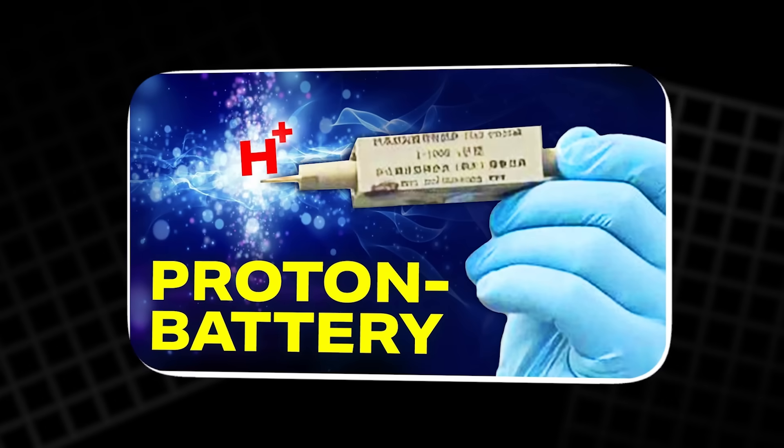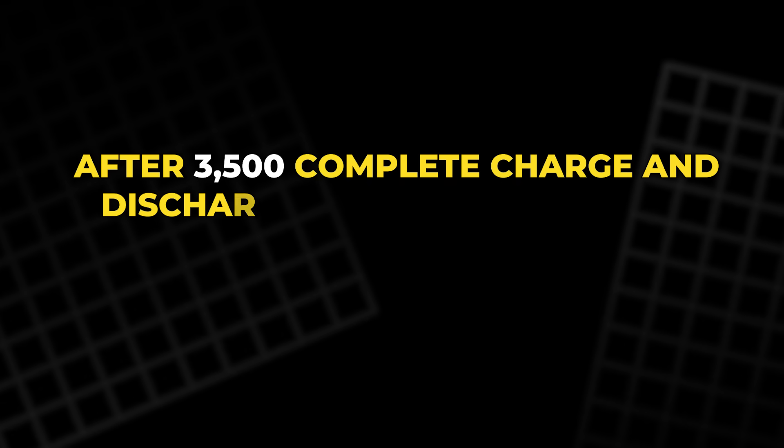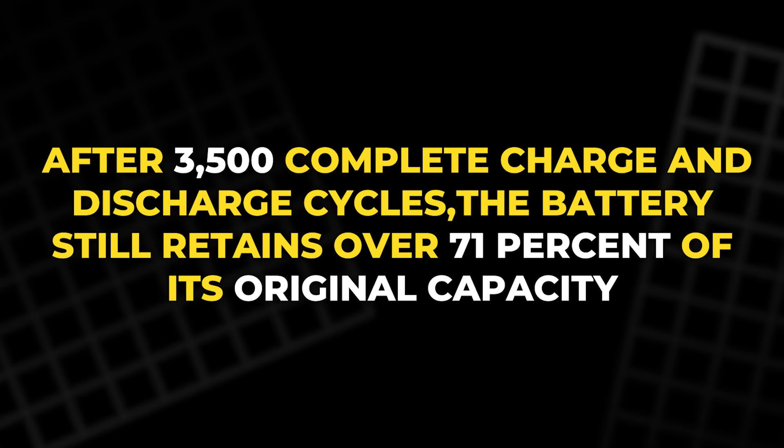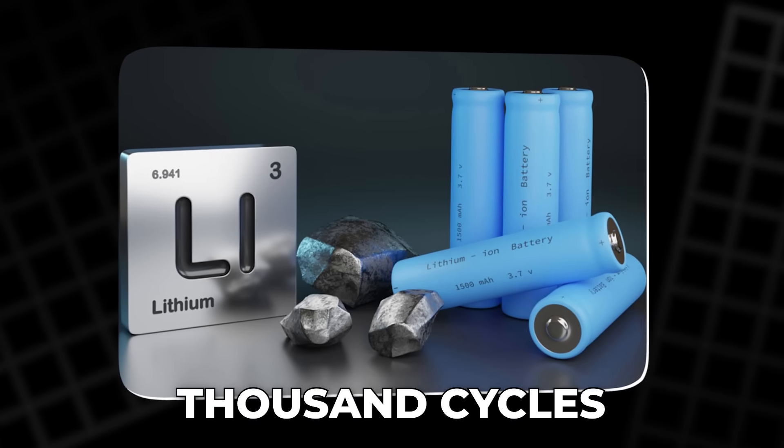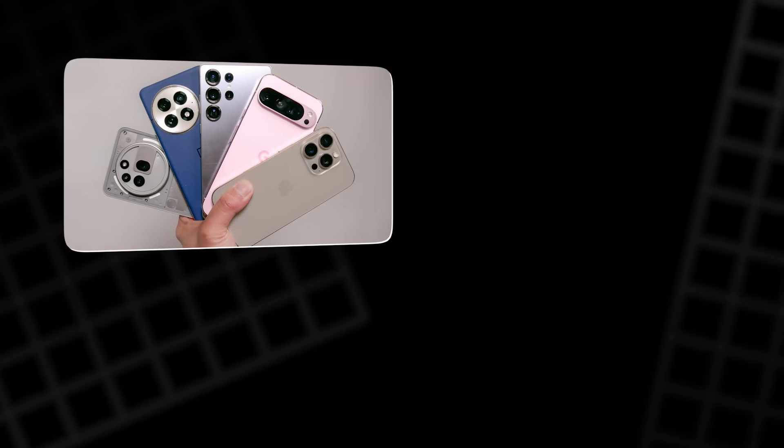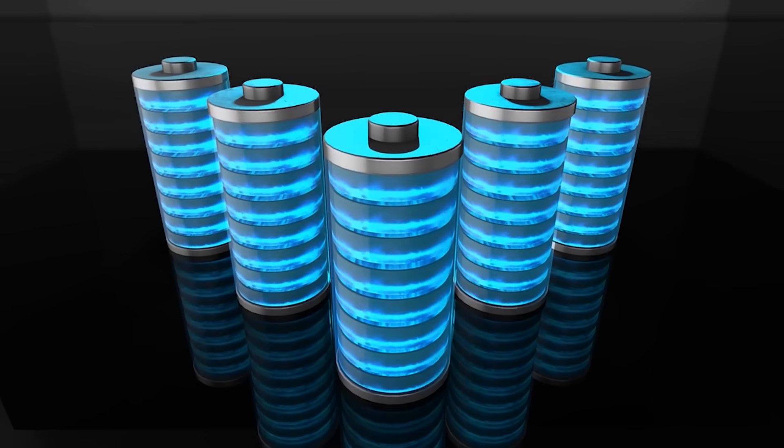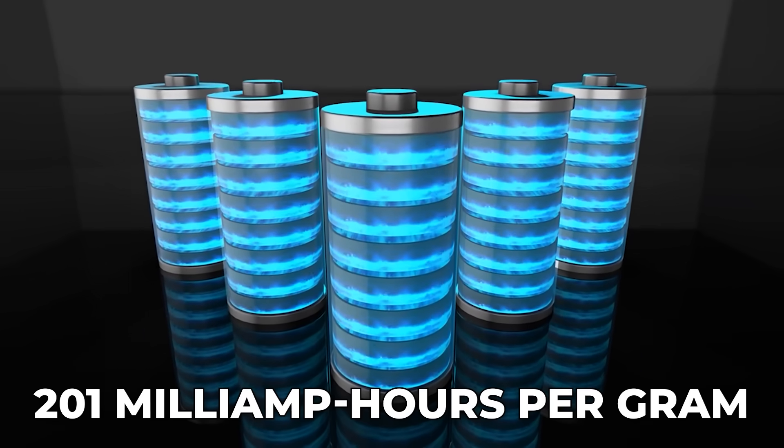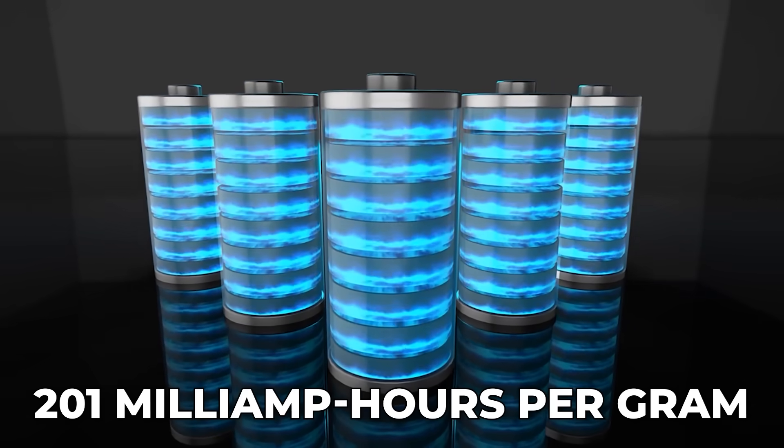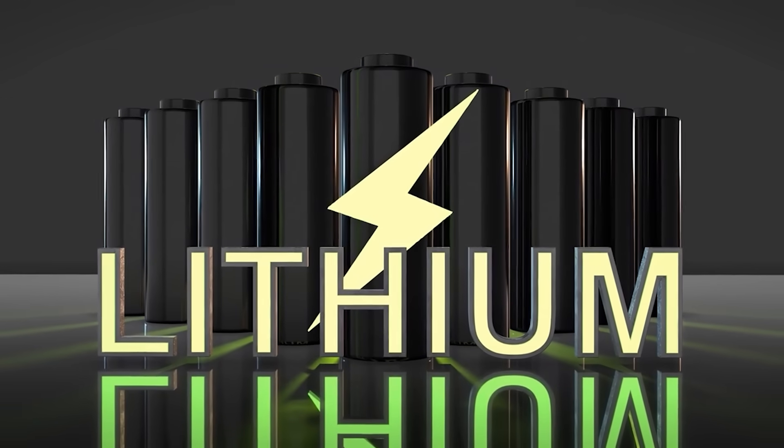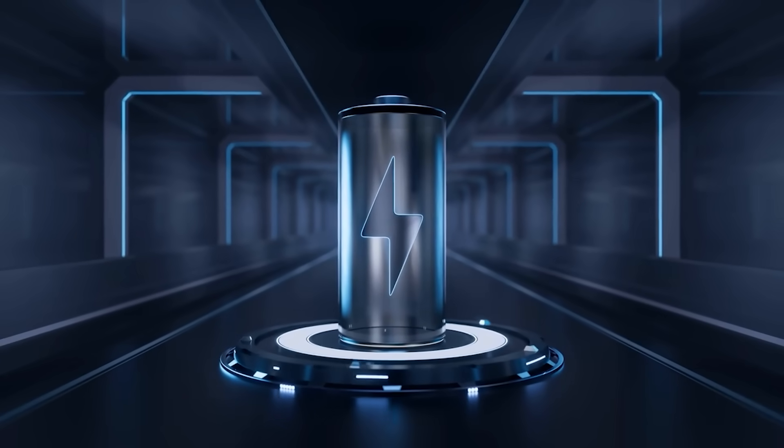It also lasts far longer than previous designs. After 3,500 complete charge and discharge cycles, the battery still retains over 71% of its original capacity. That's roughly a thousand cycles more than the average lithium-ion battery used in smartphones or electric cars. Even more impressive is its ability to perform in extreme cold. At minus 30 degrees Celsius, it still delivers 201 milliamp hours per gram. Lithium-ion batteries usually fail or lose efficiency in freezing conditions. But this proton design remains stable and powerful.